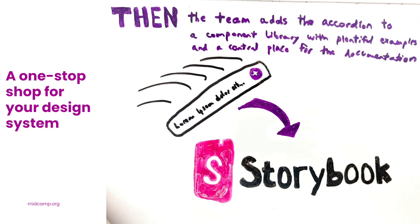Storybook, Pattern Lab, and other tools serve a useful purpose and feel like something you should do when working with components. They're a place to show examples of components, give source code for implementation, document the options for using those components — sometimes interactively — and in many cases provide more documentation around usage, accessibility, and other adjacent topics.